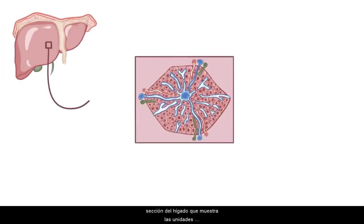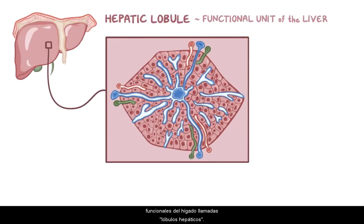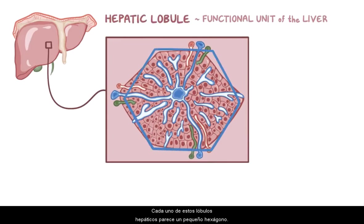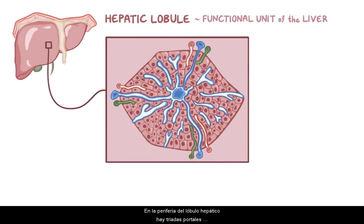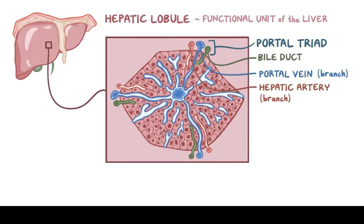Now let's take a closer look inside a section of the liver, which shows the functional units of the liver called hepatic lobules. Each hepatic lobule looks like a tiny hexagon. At the periphery of the hepatic lobule, there are portal triads, which are made up of a branch of the hepatic artery, a branch of the portal vein, and one or two small bile ducts.